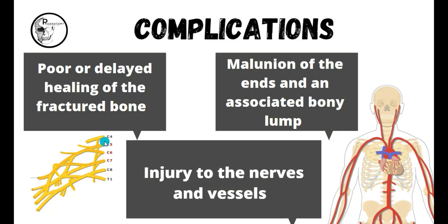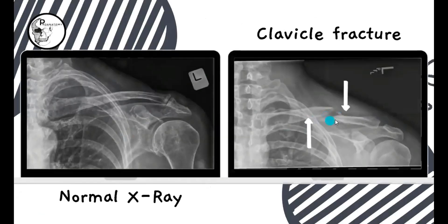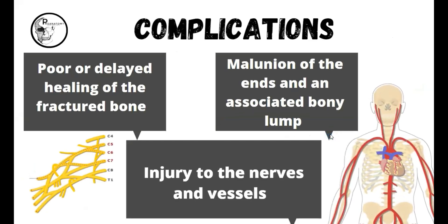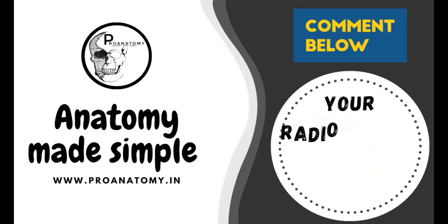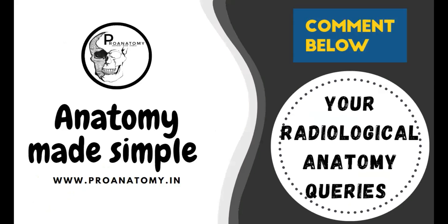One more complication can happen: with the displaced segments, they can get fixed or united in a displaced manner, causing a malunion, because ideally the fragments must be reduced back and then heal together. If that union does not happen properly, it is called malunion of the bone ends, and that will be associated with a bony lump formed at the site of the malunion. These are the commonest complications we see in clavicle fractures. If you have any further radiological or anatomical queries, do post them in the comments below and we'll be answering shortly. Thank you.